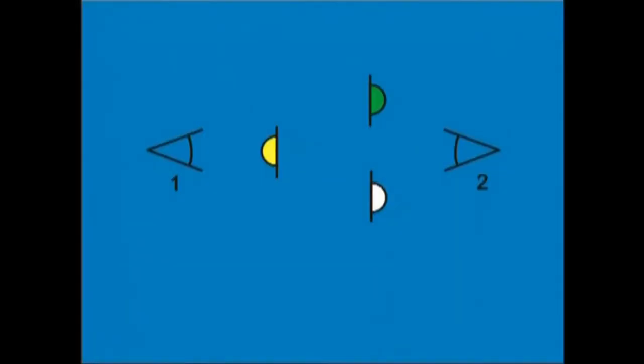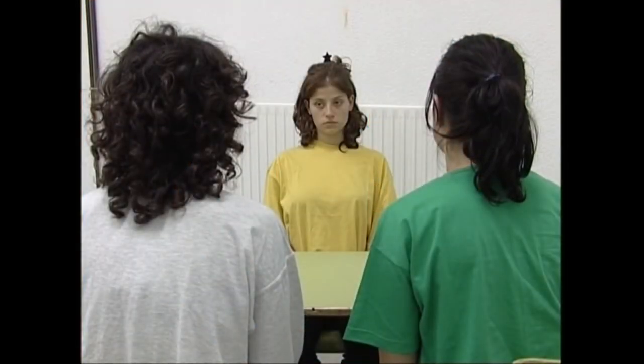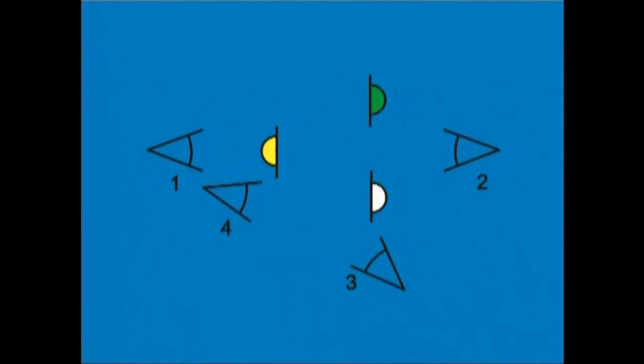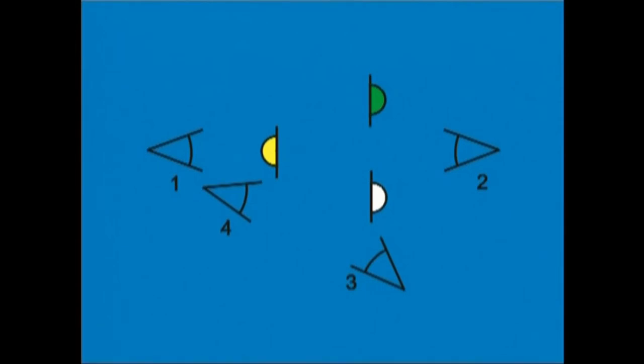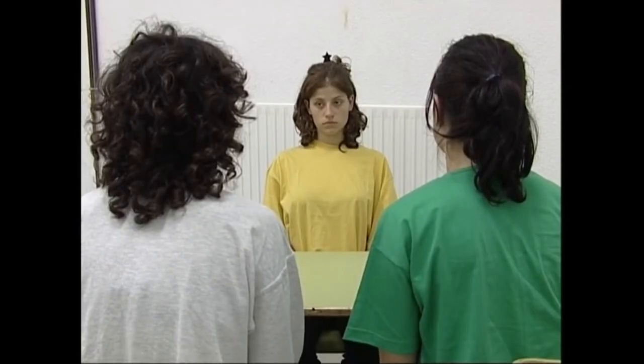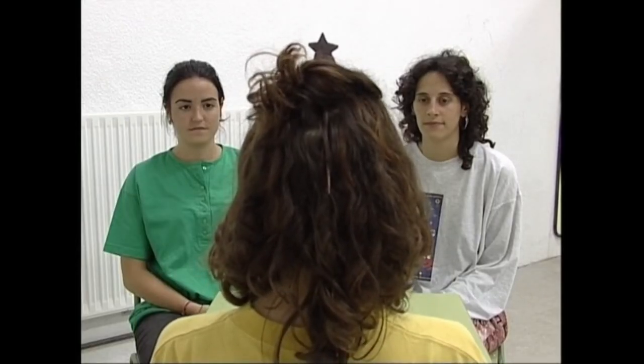Kameraren kokagune ezberdinetatik hartutako planoak nahastu ondoren, oartuko zarete iru eta lau kokaguneetatik hartutako planoetan ezer egiten ez duen aktorea baztertu egin dugula. Lau kokagune hauetatik hartutako planoak muntatzeko, orden hau jarraituko dugu: bat, bi, bat, iru, lau, iru, bat.